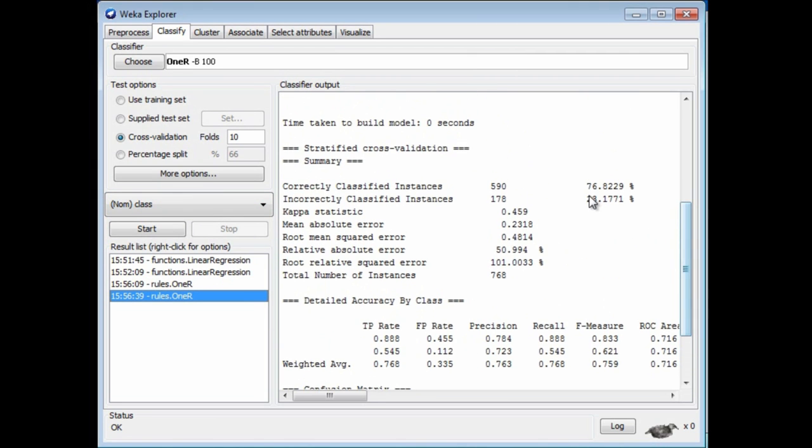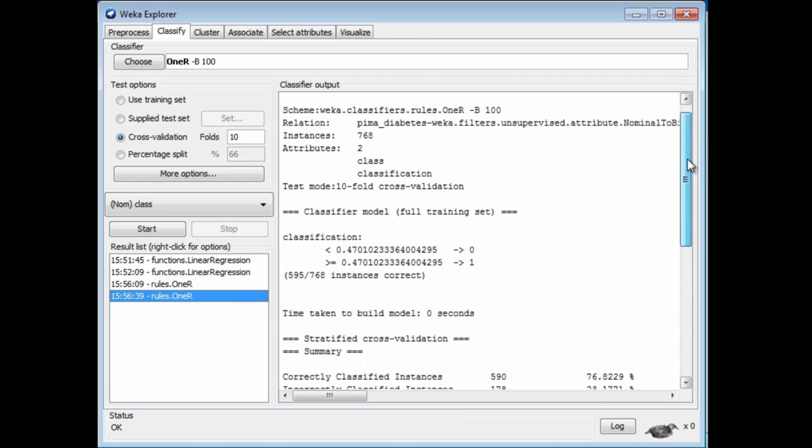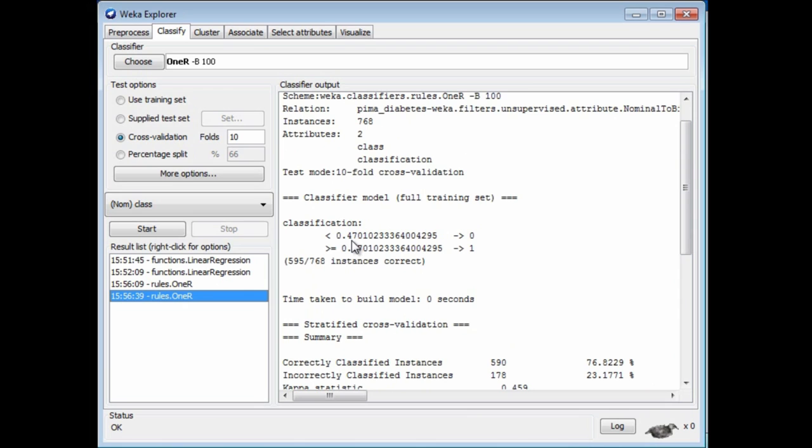Now I've got much better performance, 77% accuracy. This is the kind of split I've got. If the classification, that is the regression value, is less than 0.47, I'm going to call it a 0, otherwise I'm going to call it a 1. I've got what I wanted, classification by regression.